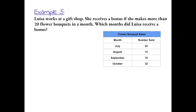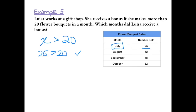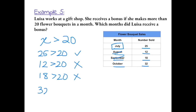Example 5: Louisa works at a gift shop. She receives a bonus if she makes more than 20 floral bouquets in a month. Which months did Louisa receive a bonus? We set up the inequality x is greater than 20, where x is the number of bouquets sold. Looking at the chart: in July she sold 25 bouquets — 25 is greater than 20, so she received a bonus. In August she sold 12 — not greater than 20, no bonus. In September she sold 18 — not greater than 20, no bonus. In October she sold 32 — greater than 20, so she received a bonus in October as well.